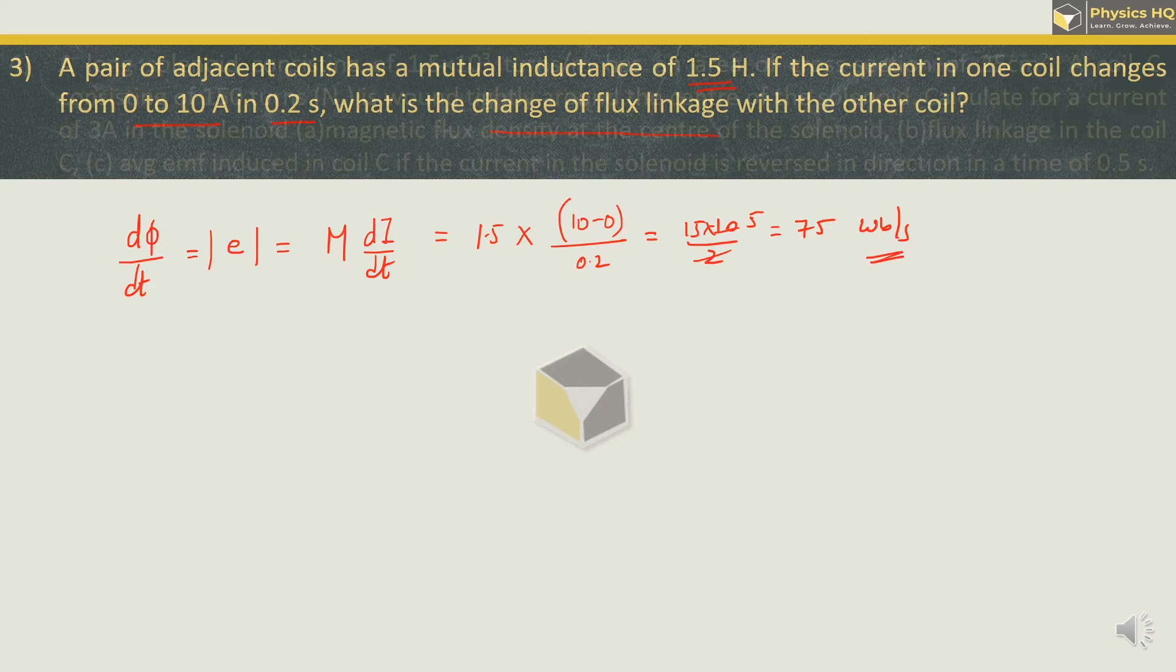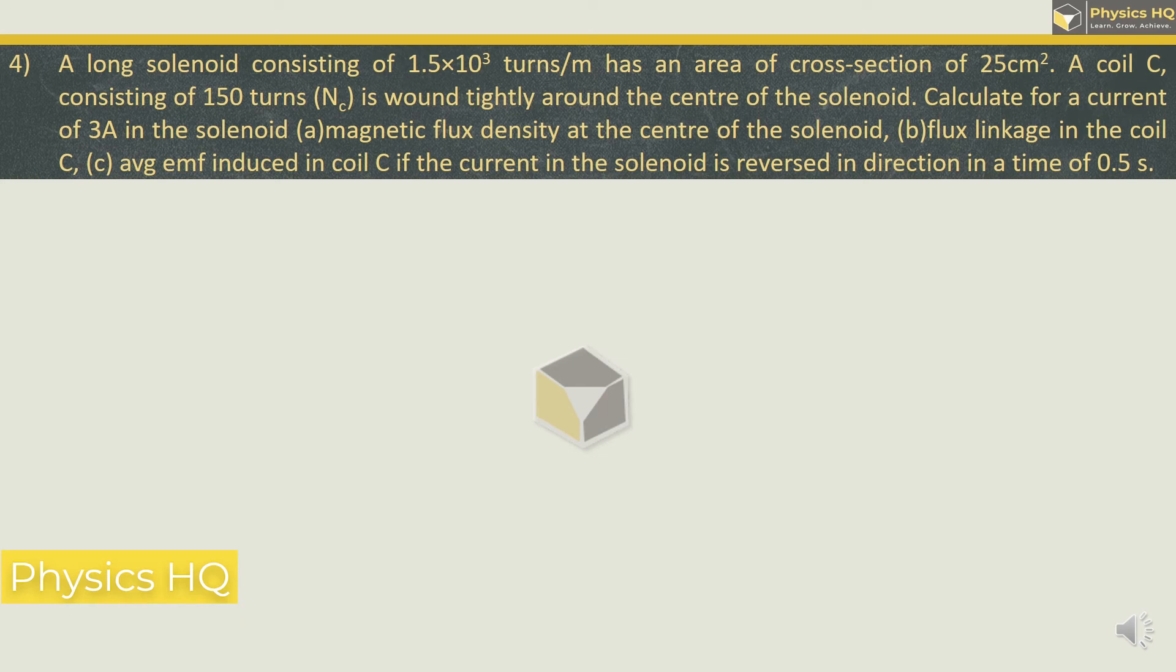Hope you all understood this. Let us check out the next problem. A long solenoid consisting of 1.5 into 10 raise to 3 turns per meter has a cross section area of 25 centimeter square. Another coil C consisting of 150 turns is wound tightly around the center of the solenoid.